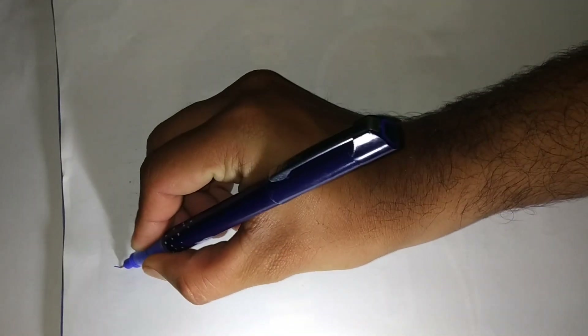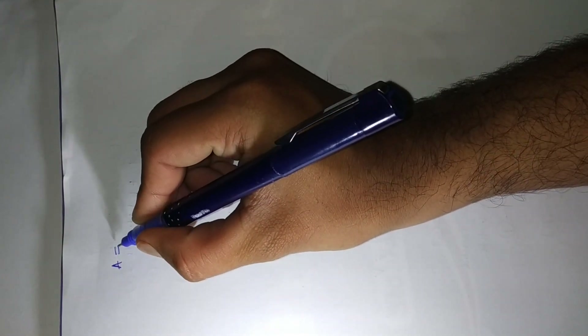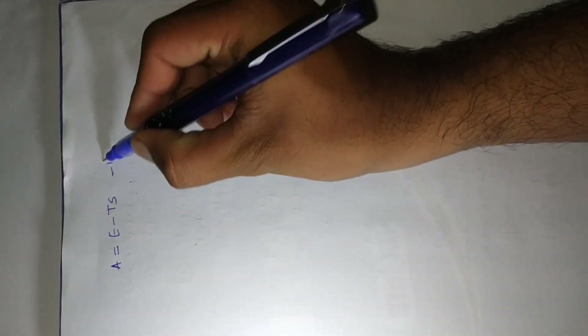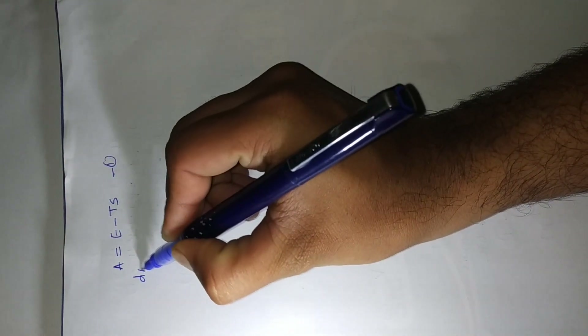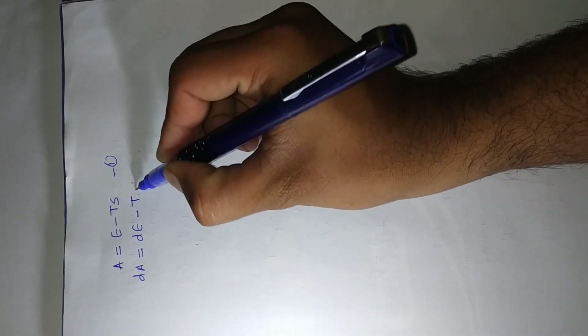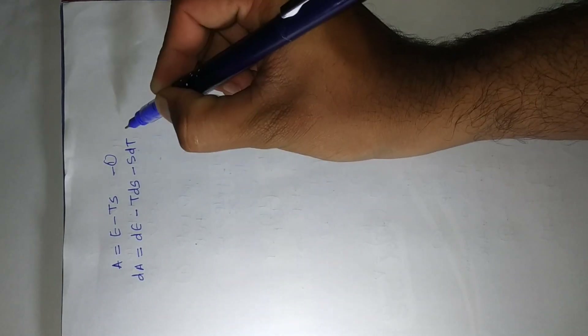In this video we are going to derive the thermodynamic Maxwell equation number 3. For that we start with the definition of A: the definition of A is equal to E minus TS. This is the mathematical definition of the work function A. If you take the differentiation of this equation, you will get: dA = dE minus T·dS minus S·dT. This is equation number 2.